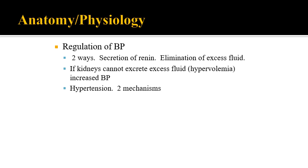When an individual has hypertension, there can be two mechanisms: either increased renin, or hypervolemia — an excessive amount of fluid in the circulation. In either instance, this can cause damage to the nephron. One of the fears with someone who has hypertension, in addition to damage in other areas, is the added stress placed on the kidneys, particularly on that functional unit, the nephron.